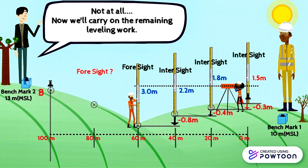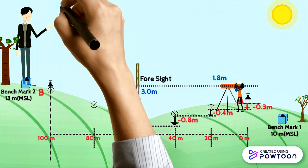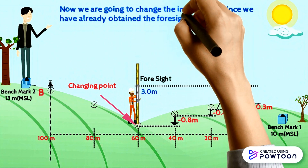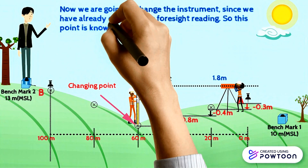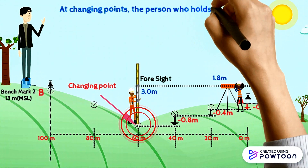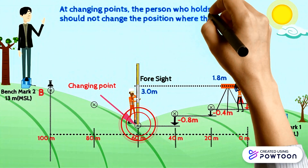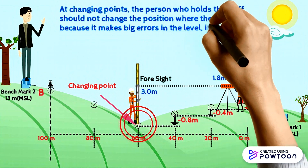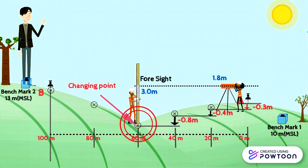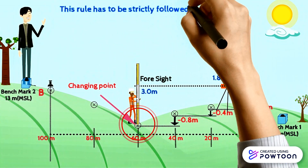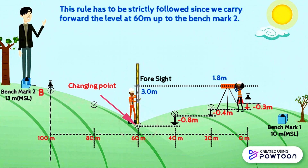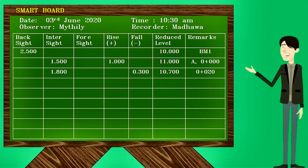Now we will carry on the remaining leveling work. We are going to change the instrument since we have already obtained the foresight reading, so this point is known as a changing point. At changing points, the person holding the staff should not change position, because moving the staff to a place with a different ground level causes big errors in leveling.